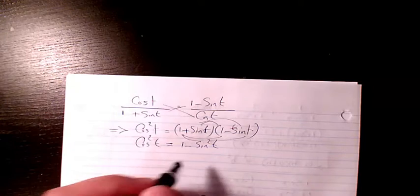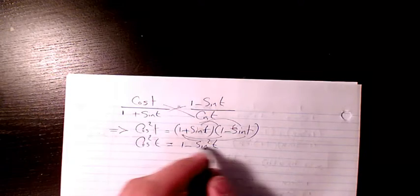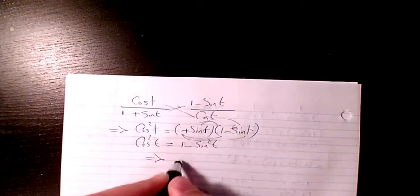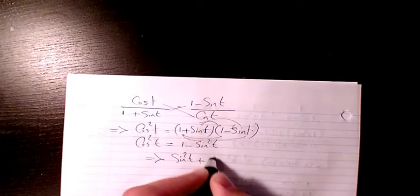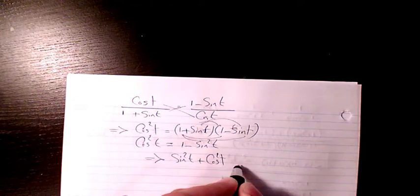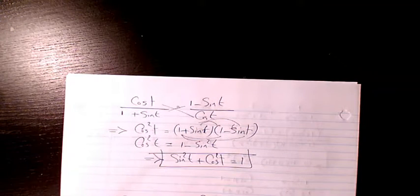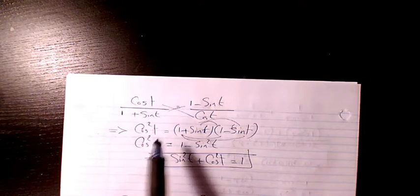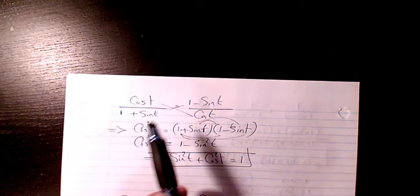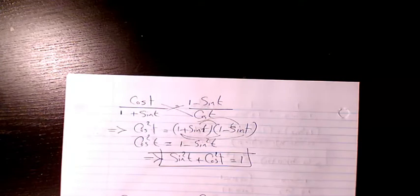As you know, sine squared t plus cosine squared t will always equal 1. So basically that's how sometimes we need to prove trigonometric identities by using cross multiplication.